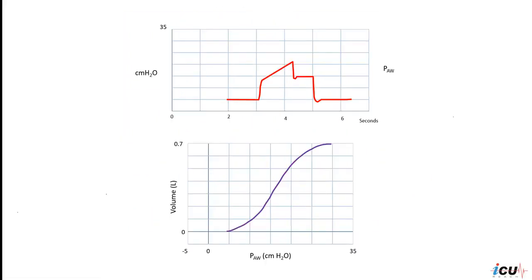In the first example, the tracing is straight. You can see the pressure time curve has a straight linear increase in pressure. The stress index here equals one, which indicates that the tidal volume occurs in the low risk ventilatory area between the lower and upper inflection points. That's what you want to see in the management of ARDS on mechanical ventilation.